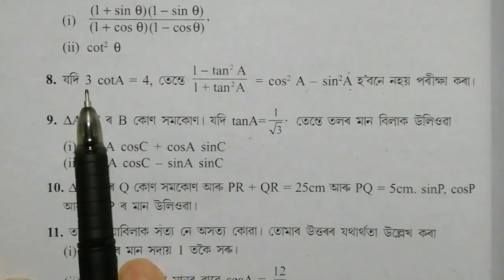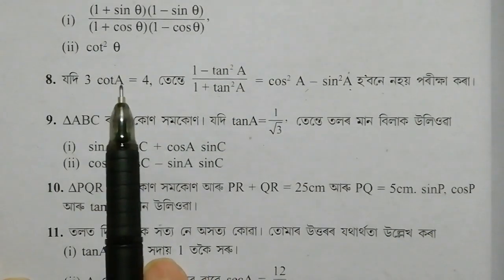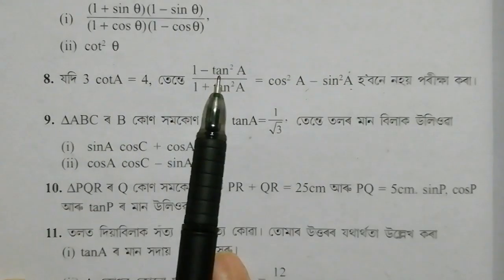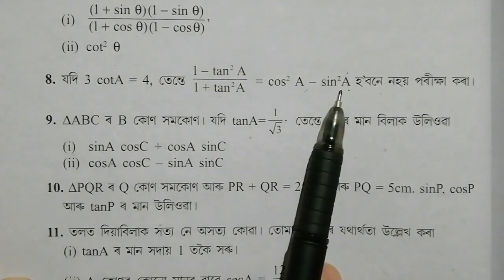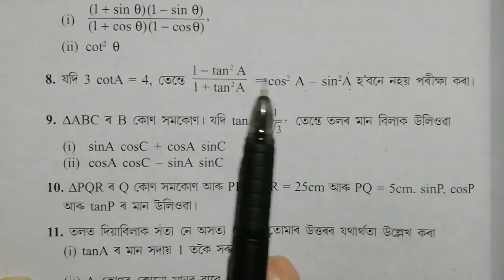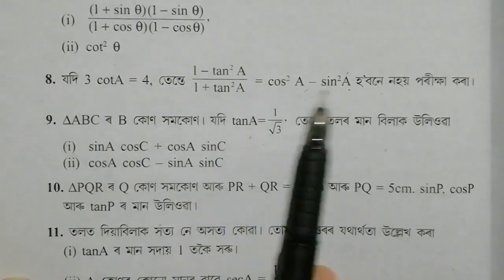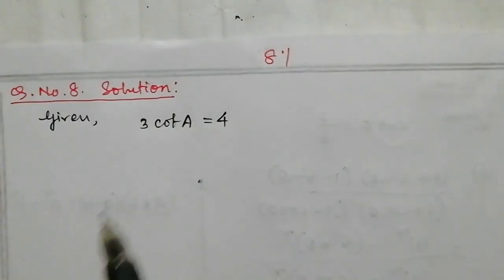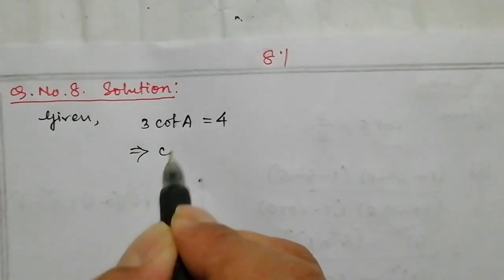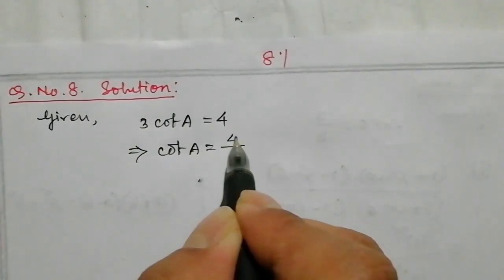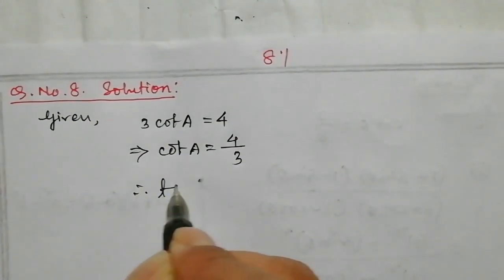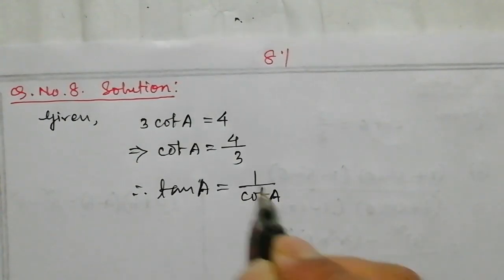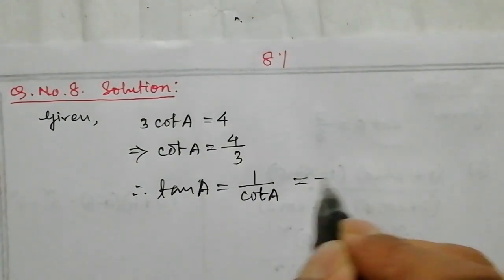We are given 3 cot A equals 4, so cot A equals 4 by 3. Therefore tan A equals 1 divided by cot A, and since cot A is 4 by 3, tan A equals 3 by 4.